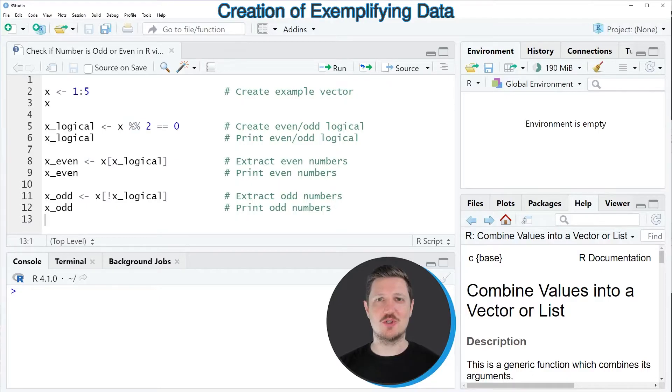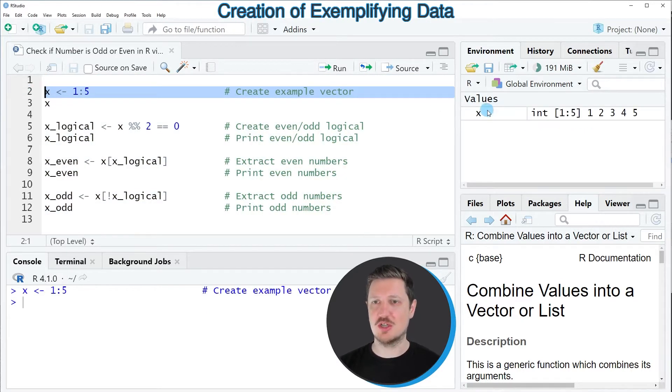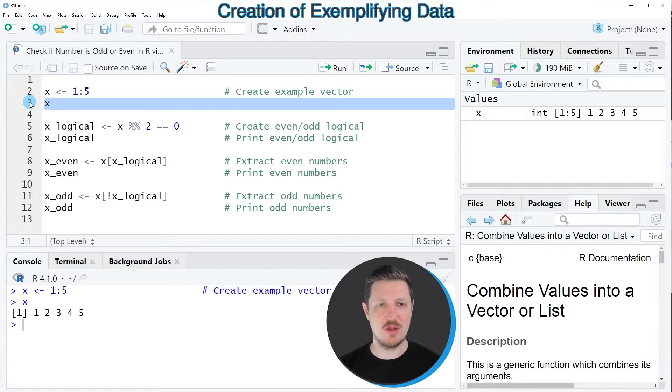In this video I will show you several examples. For these examples, we first need to create a data object containing numbers, as you can see in line 2 of the code. After running this line, a new data object called x appears at the top right. We can print this data object to the RStudio console by running line 3, and you can see that we have created a vector containing the values 1, 2, 3, 4, and 5.